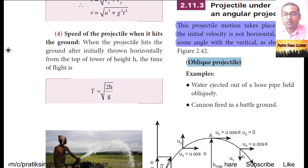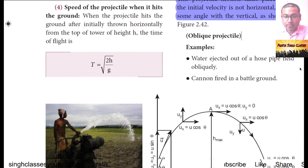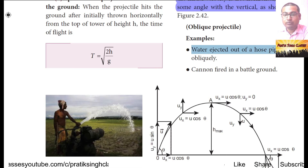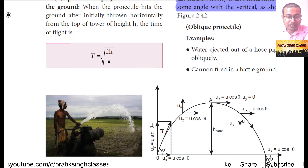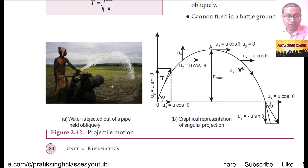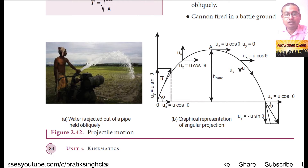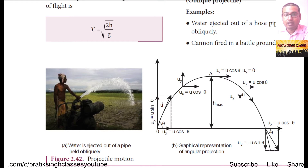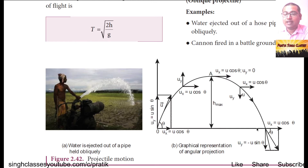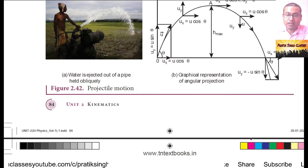Coming to oblique projectile — what is the meaning of oblique projectile? For example, water ejected out of a hose pipe held obliquely. Here you can see a farmer irrigating his land, with water coming out of the nozzle at an angle theta with the horizontal, and the path of the water is in the form of a projectile. Another example is a cannon fired in a battleground, where the path of the cannonball is a projectile trajectory.